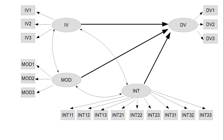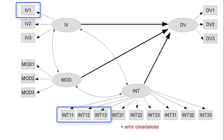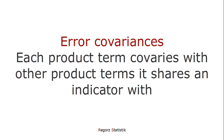Those are the double mean centered product terms, but there's one element still missing: we need error covariances. The reason is that those interaction terms share components — that is, indicators for the independent variable or for the moderator. For instance, those first three indicators are all based on independent variable 1, and for that reason we should model error covariances between those three.